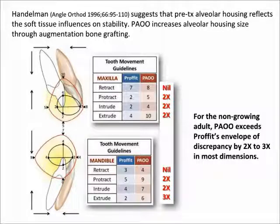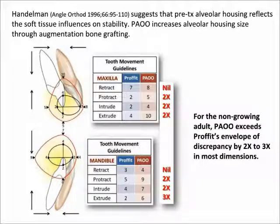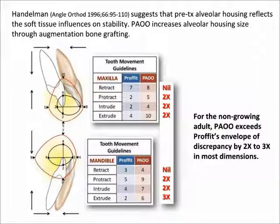Handelman, in a 1996 Angle Orthodontist publication, suggested that pretreatment alveolar housing reflects soft tissue influences on stability. PAOO increases alveolar housing size through augmentation bone grafting. As described in the present article, PAOO treatment limits for incisors exceed the envelope of discrepancy described by Proffit for adult non-growing patients by 2-3 times in all dimensions except retraction.